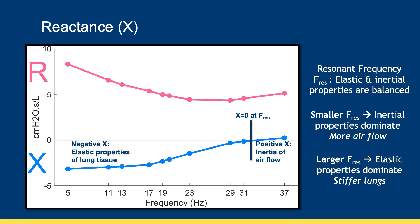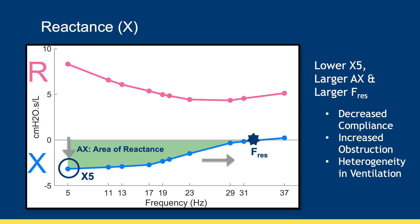A smaller resonant frequency means that the volume of aerated regions of the lung is bigger and the inertial properties of the lung dominate. A larger resonant frequency means that the elastic properties of the lung dominate and the lung tissues are stiffer and more difficult to inflate. A less compliant, stiffer lung has a lower, more negative low-frequency X and a larger area of reactance, or AX, which is the triangular area bounded by the low-frequency X and the resonant frequency. A larger AX reflects heterogeneity in ventilation, or that the volume of aerated regions in the lung is smaller, which can occur from airway obstruction or collapse.